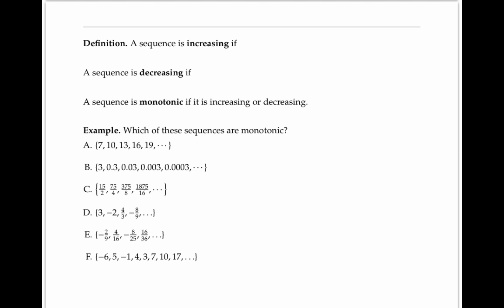A sequence is called increasing if each term is less than the next term. In other words, a sub n is less than a sub n plus one for all n. A sequence is called monotonic if it's either increasing or decreasing.